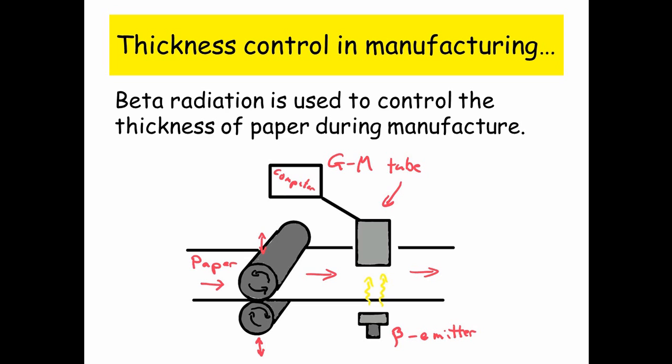With the beta emitter, if not very much radiation gets through, that's because the paper's become too thick. And if a lot of radiation gets through, that's because the paper's become too thin. The computer can work out how thick the paper is by sensing the amount of radiation getting through, and therefore control the thickness of the paper.